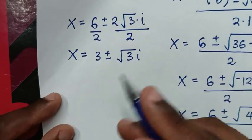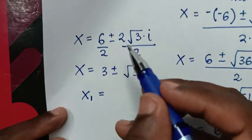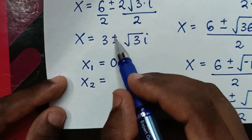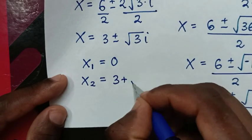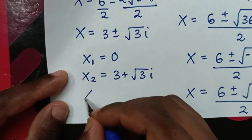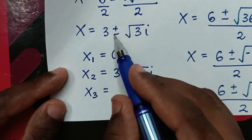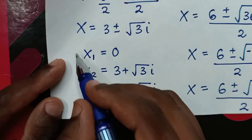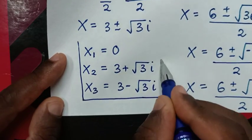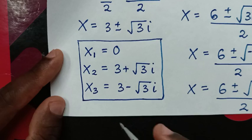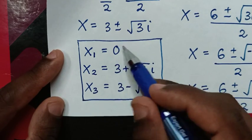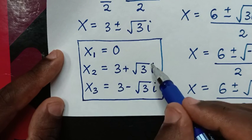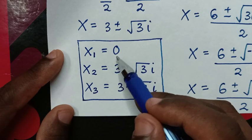Therefore the first value of x is 0. The second value of x is 3 + √3 i. And the third value of x is 3 - √3 i. So these are all the values of x in this problem.